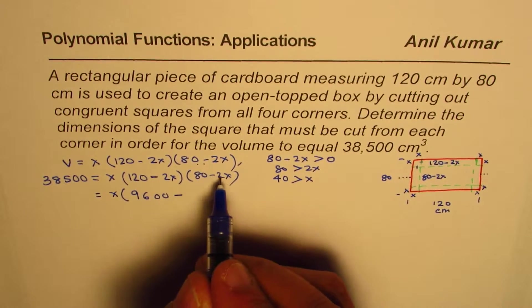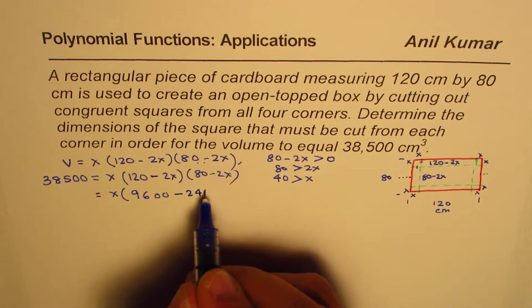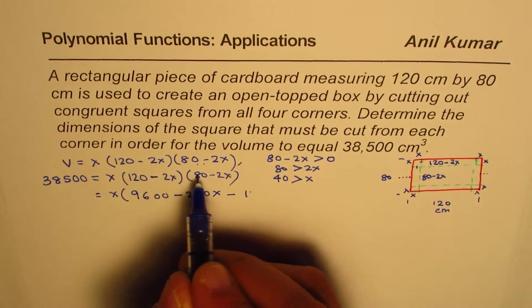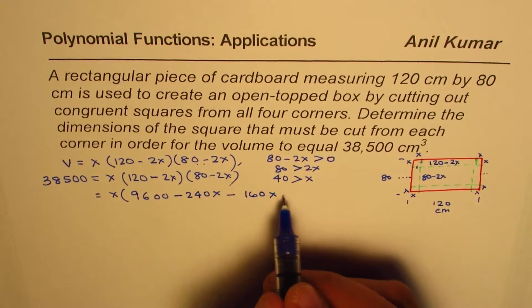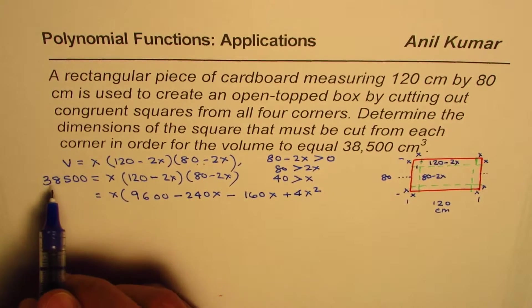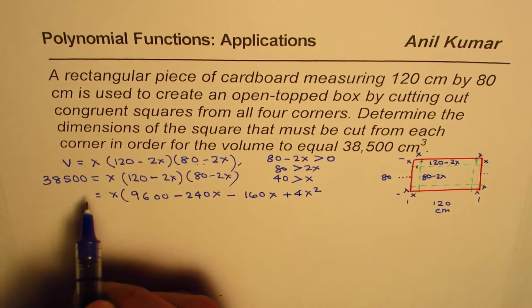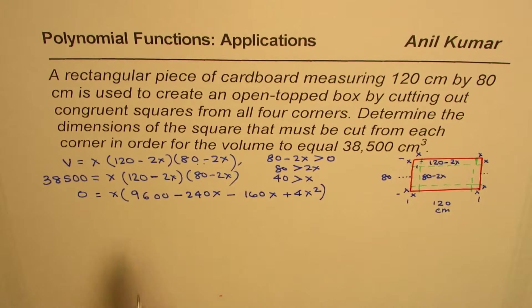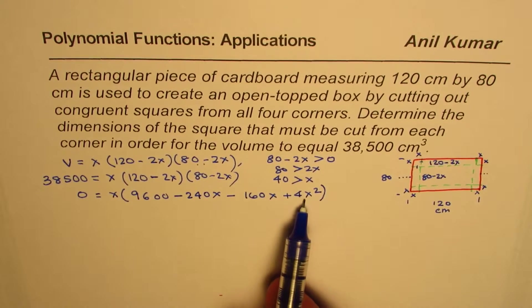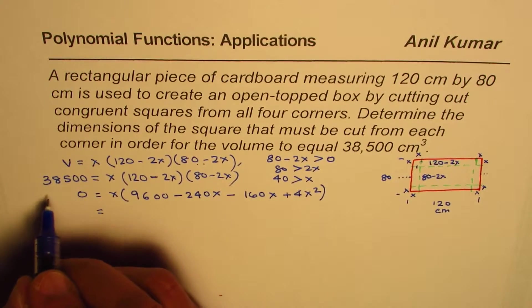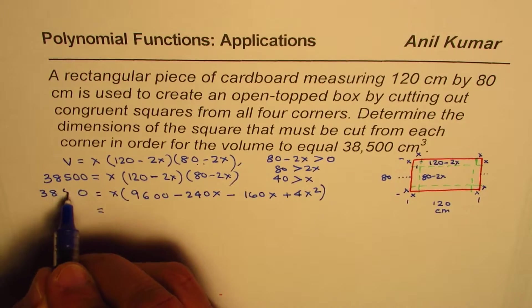Minus 120 times 2X is 240X. When multiplied by minus 2X, we get 8 times 2 is 16, 160X, and that gives us plus 4X squared. So that is it. We have 38,500, which we can take on the right side. So we are looking at a cubic equation here when you open this up.